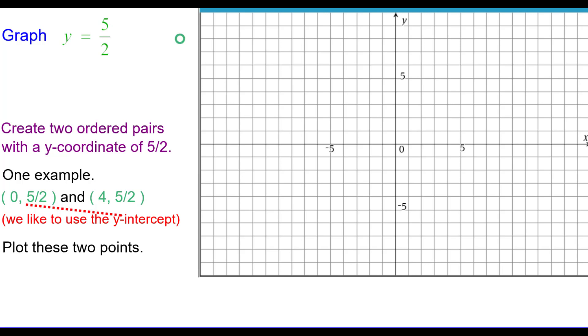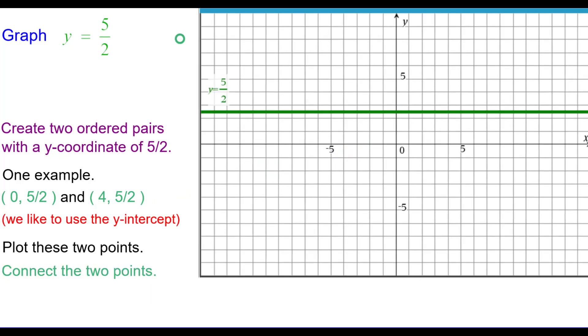Plot those two points: 0, 2 and a half, and 4 comma 2 and a half. Recall that two points determine a unique line, and so we connect the two points.